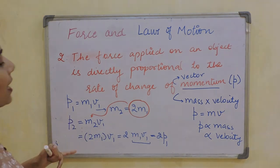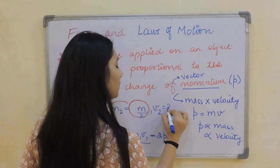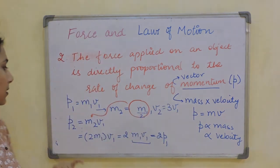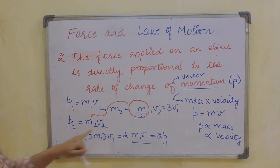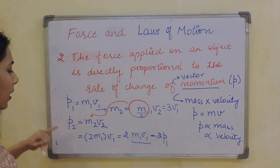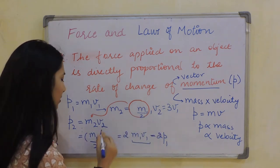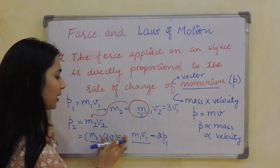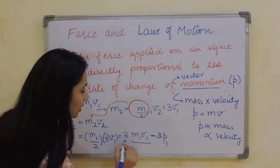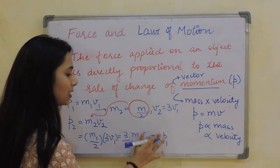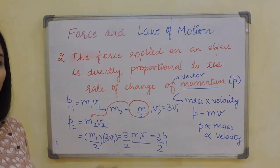Another example: if mass is reduced by half and velocity becomes three times. Then P2 = M2·V2, where M2 = M1/2 and V2 = 3·V1. So P2 = (M1/2)·(3·V1) = (3/2)·M1·V1 = (3/2)·P1. The new momentum is three-halves of the original.